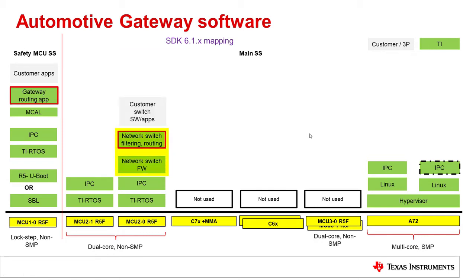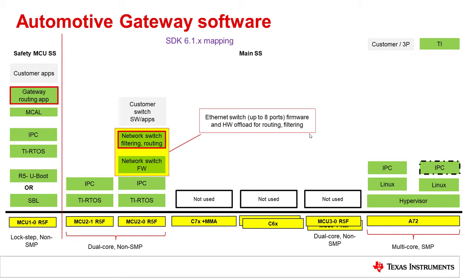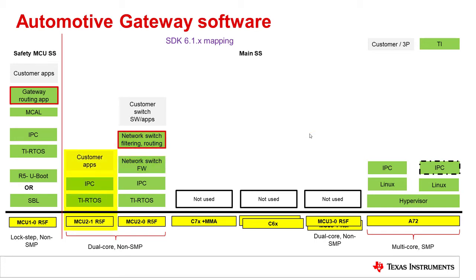MCU2_0 R5F, in the main domain, hosts the firmware for the integrated Ethernet switch. The Ethernet switch firmware provides the necessary interface for configuration of the switch, which is used by the demo application that illustrates the Ethernet switch filtering and routing capabilities. MCU2_1 R5F is currently unused and can be used for hosting customer applications. On the A72 side, the Linux kernel includes support for storage drivers like eMMC and NVMe SSD. The Linux SDK also includes a virtual Ethernet driver that can be used for direct packet transmission and reception from the A72 core. The network stack comprising TCP/IP and other layers is integrated on all cores, including the R5F that hosts the Ethernet switch firmware.